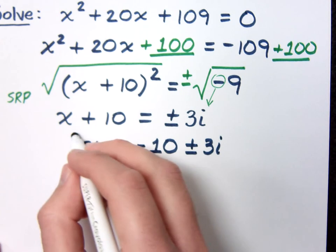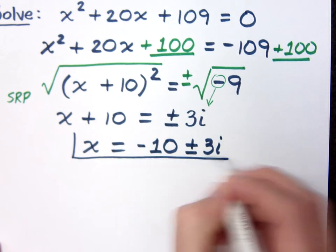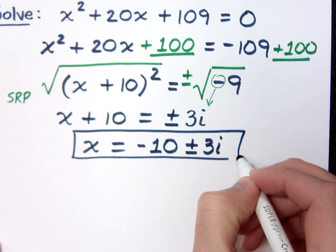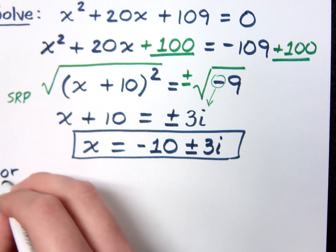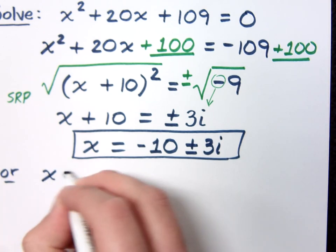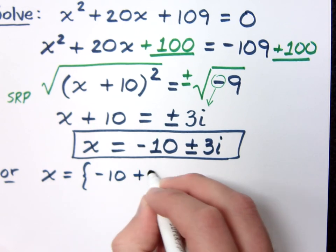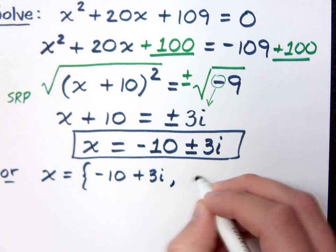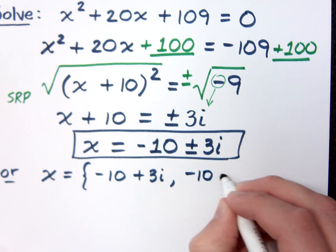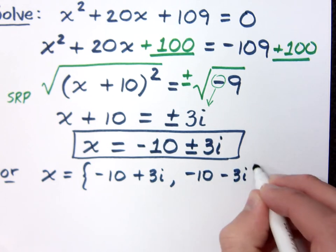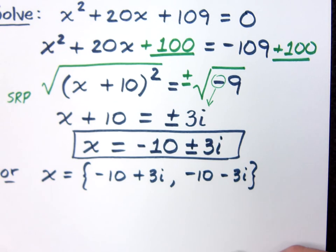So I could go ahead and box this and I would be totally fine with you guys doing that. You may also see your answers written like this, using that set notation. And we could say x equals negative 10 plus 3i and negative 10 minus 3i. So we can just list our solutions like this.